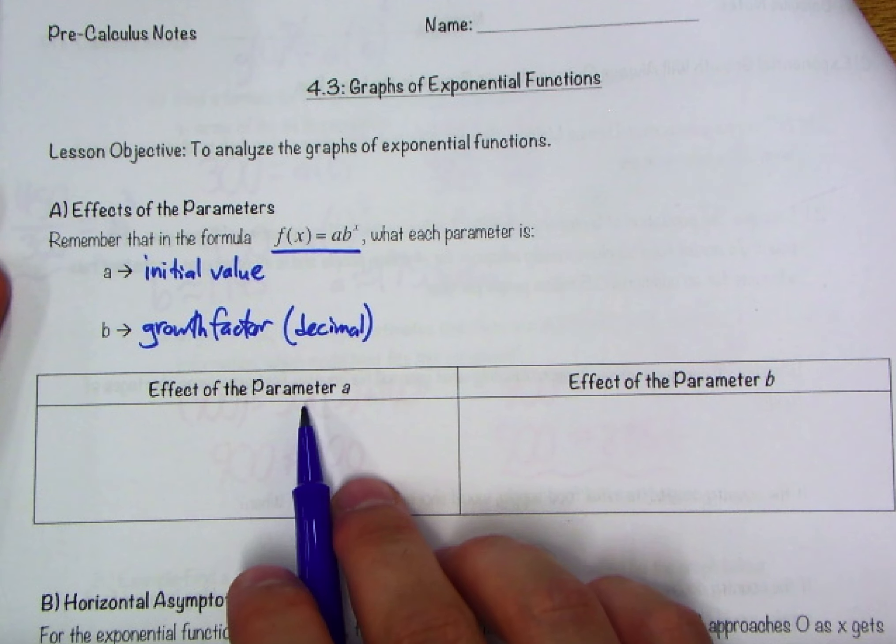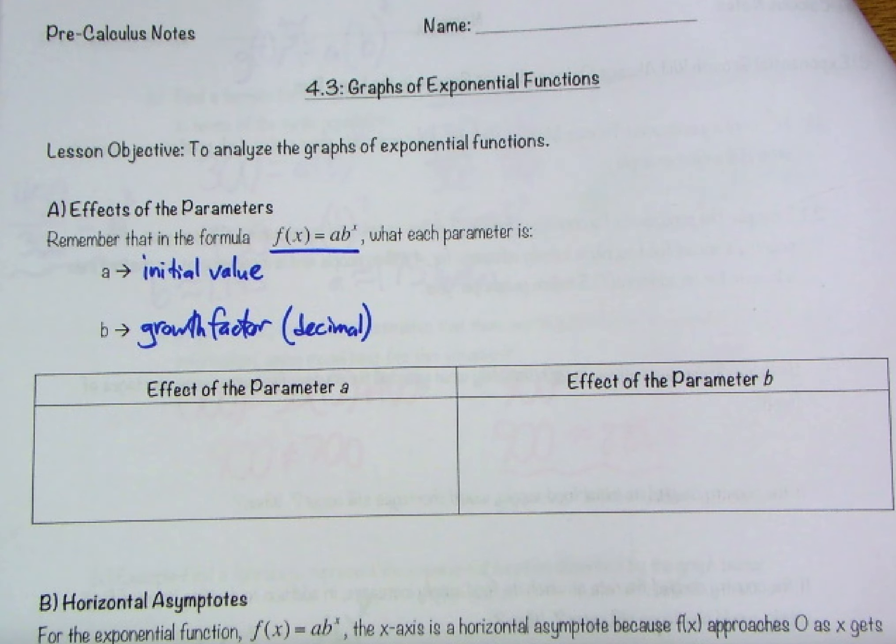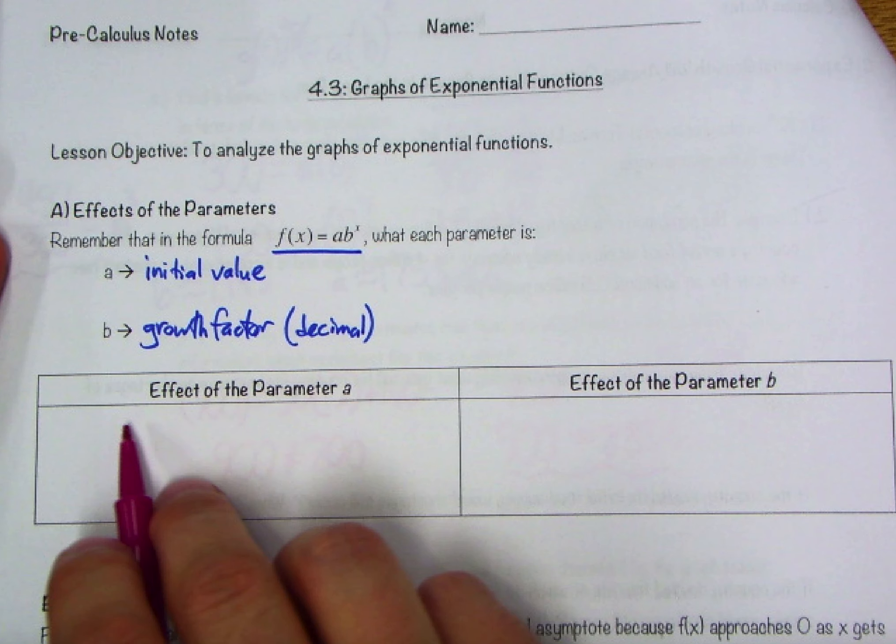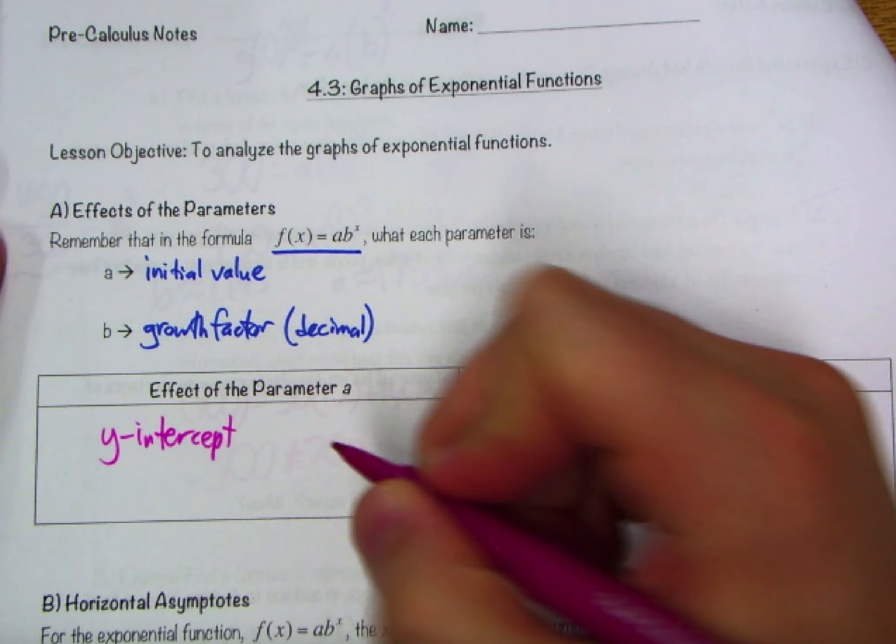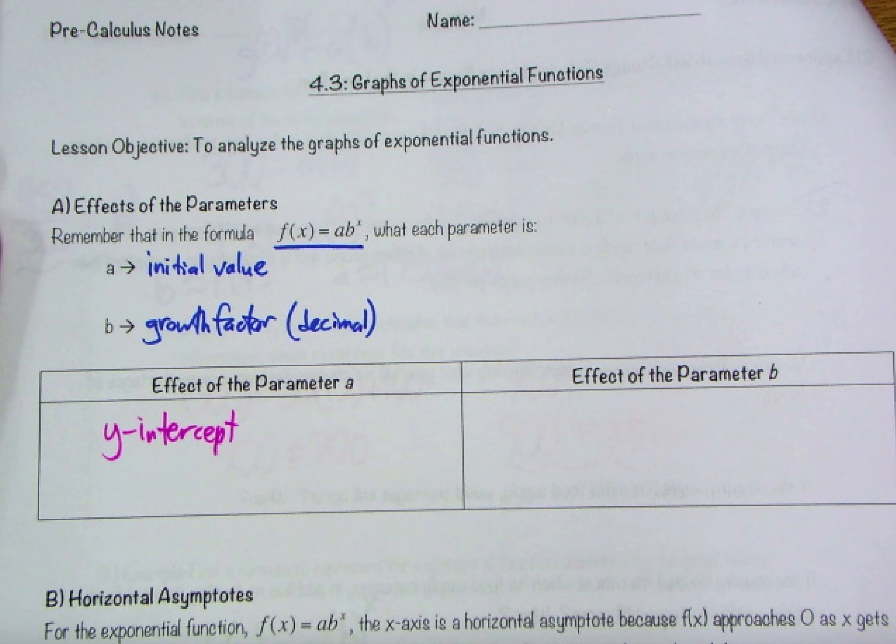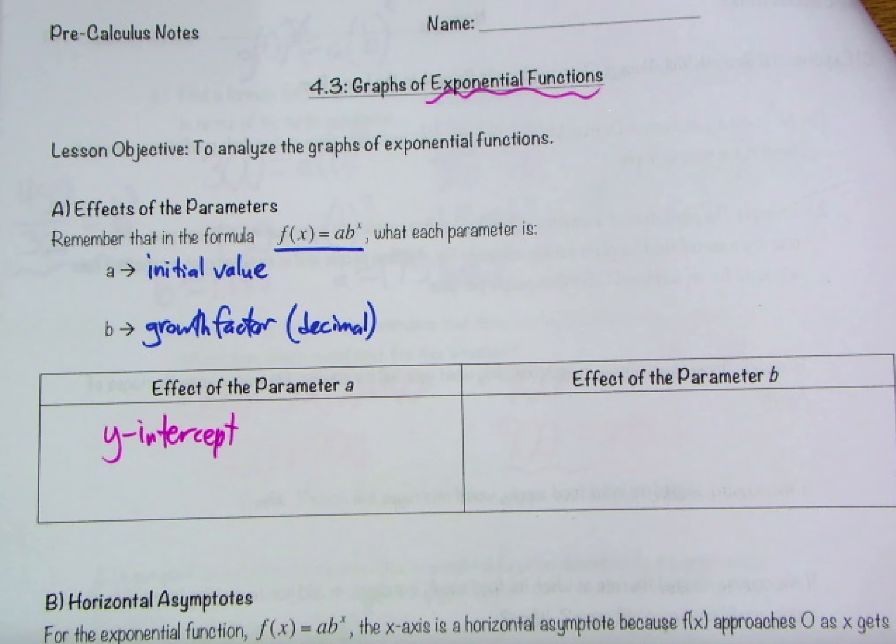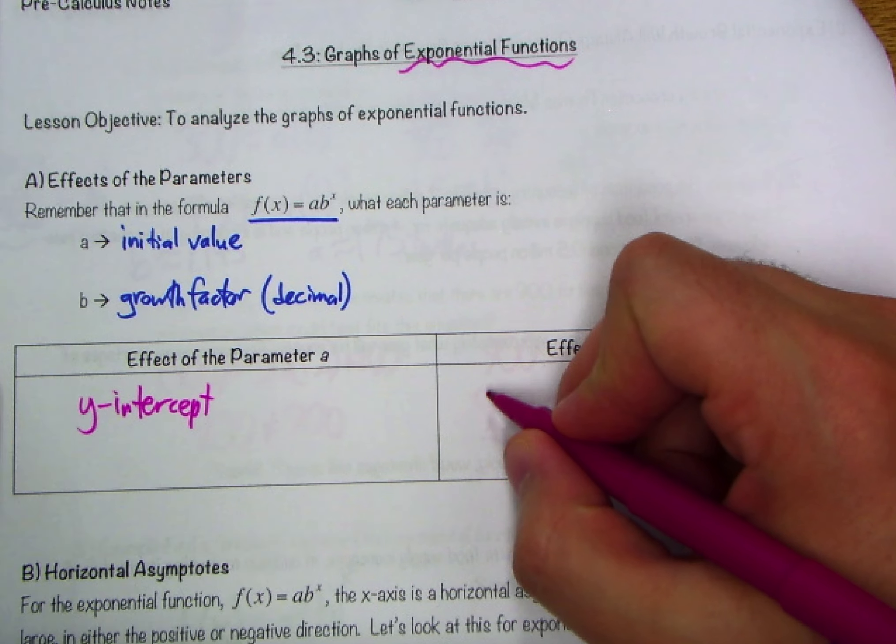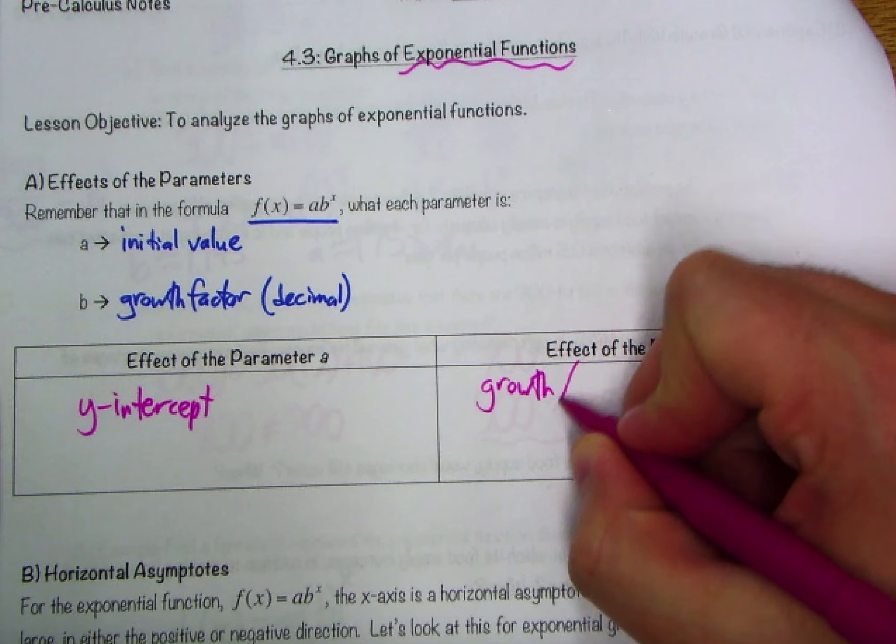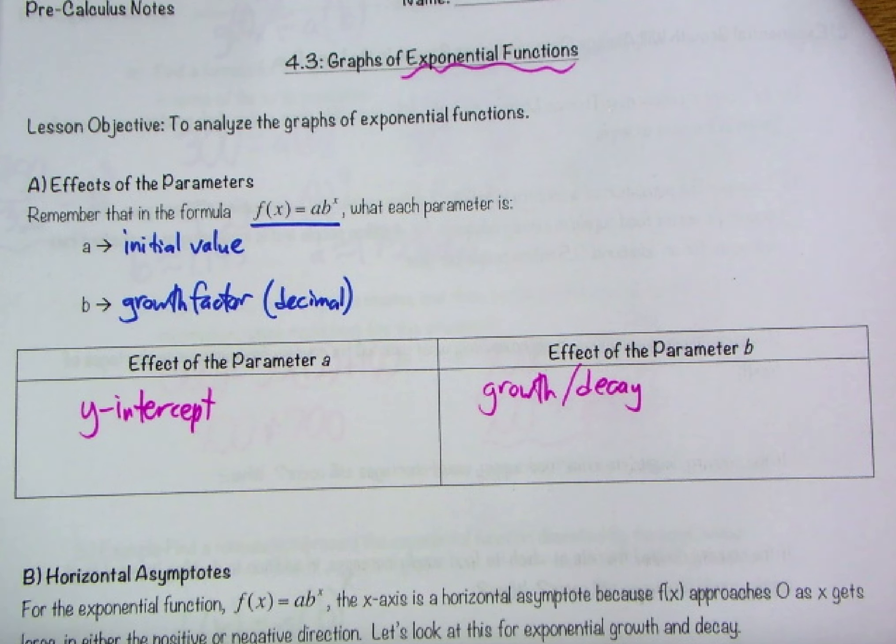We're going to focus today a lot on the effects of these two things graphically. The effect of parameter a was really just our y-intercept. Any type of exponential function, a was always going to be where we cross the y-axis. The effect of parameter b is going to indicate growth or decay.